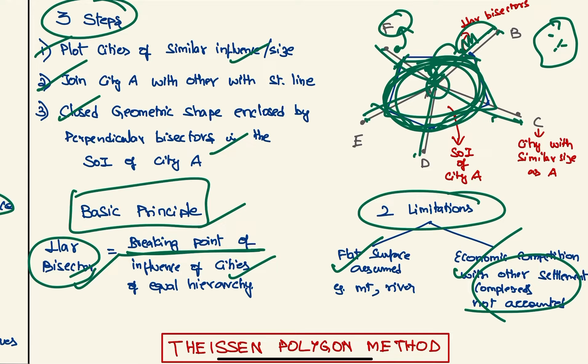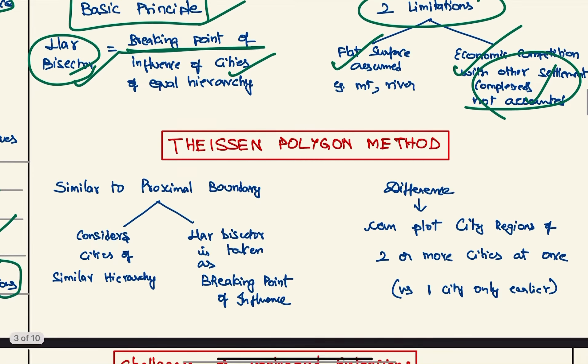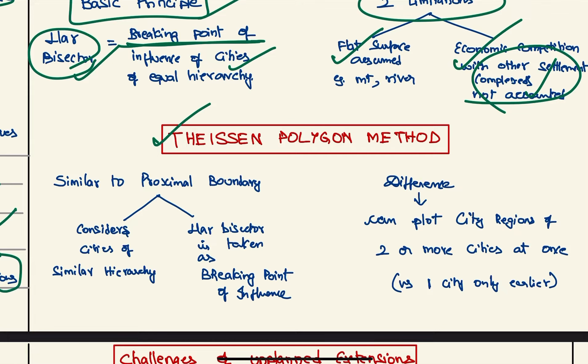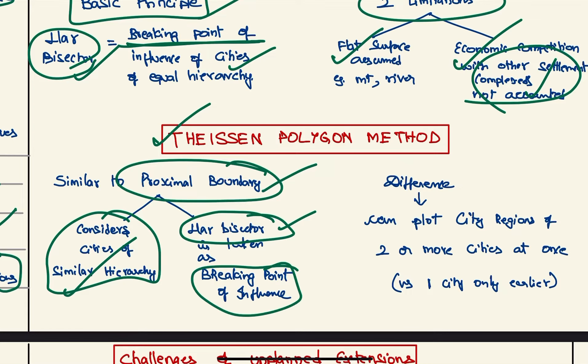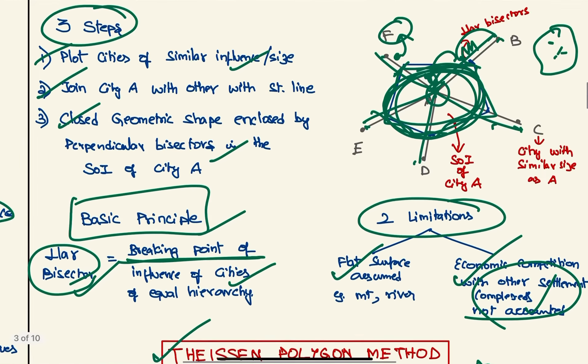Next we have Thiessen polygon method. This is also very similar to proximal boundary in that it also considers cities of similar hierarchy, and it also uses the perpendicular bisector as the breaking point of influence. But the main difference is that in this method we can plot city regions of two or more cities at one time. Like we can see here, we can plot only for one city.